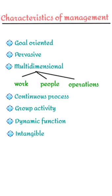Now we will move on to the characteristics or features of management. The first feature is that management is a goal-oriented process. Different organizations have different goals, but to achieve those goals, managers unite the efforts of each and every individual towards achieving that common goal.